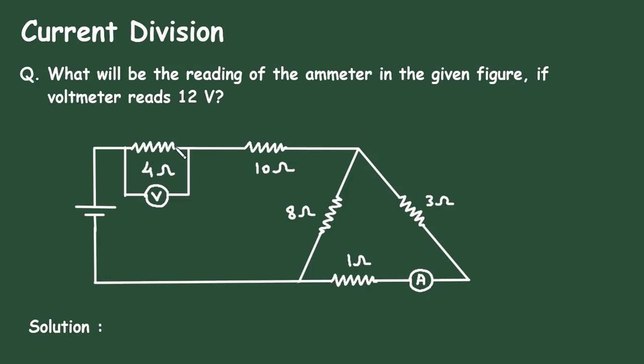we can find the current through this 4 ohm. The same current will flow through this 10 ohm and here we will apply current division rule and we will find the value of this ammeter.